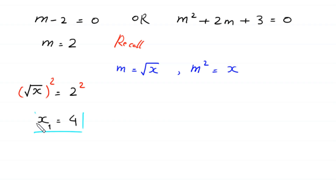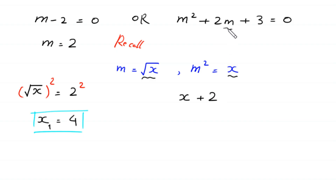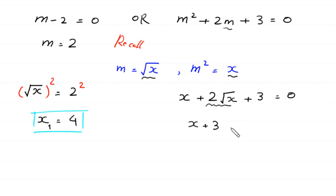Now in the second equation m squared plus 2m plus 3 equals 0, we substitute m squared with x and m with square root of x. So the equation becomes x plus 2 times square root of x plus 3 equals 0. Moving the 2 root x to the right side gives x plus 3 equals negative 2 times square root of x. We then square both sides.